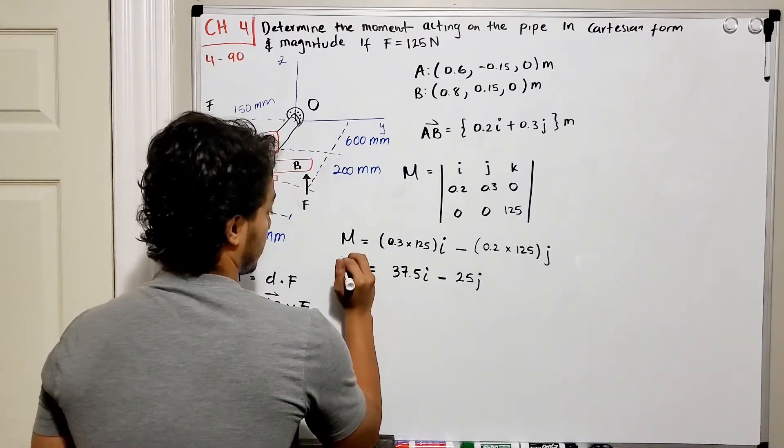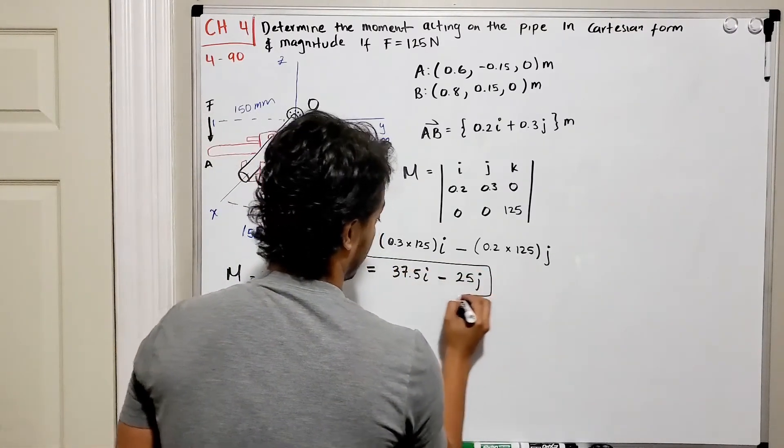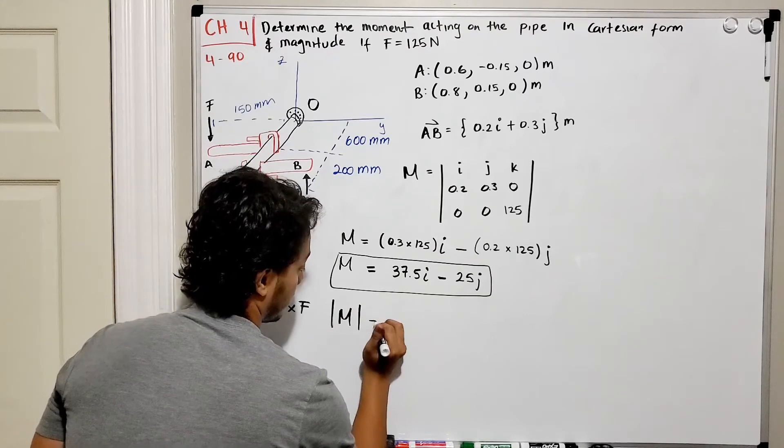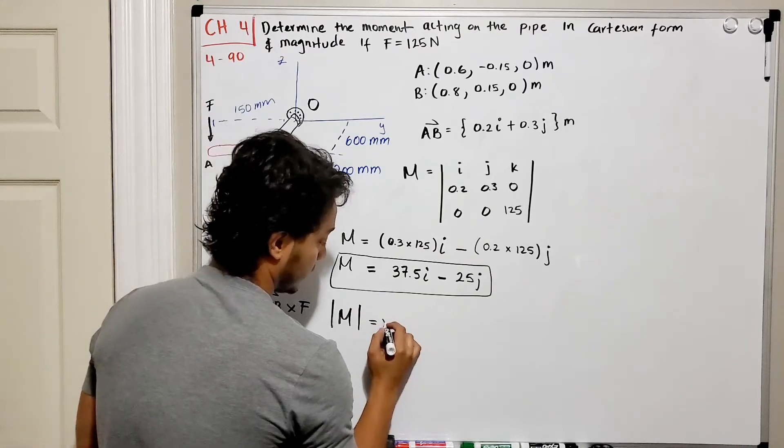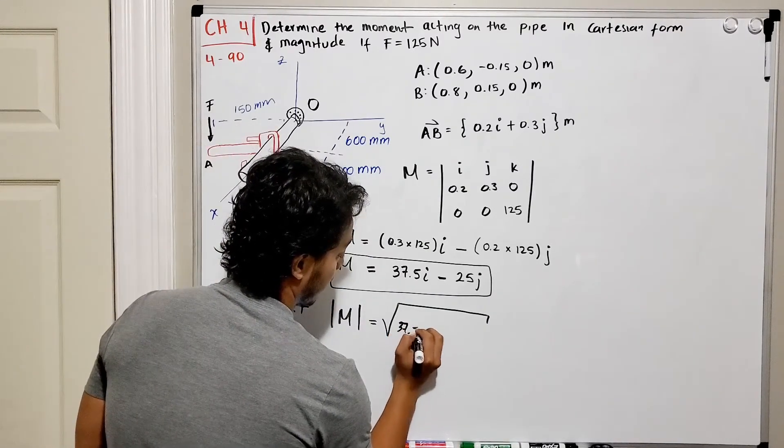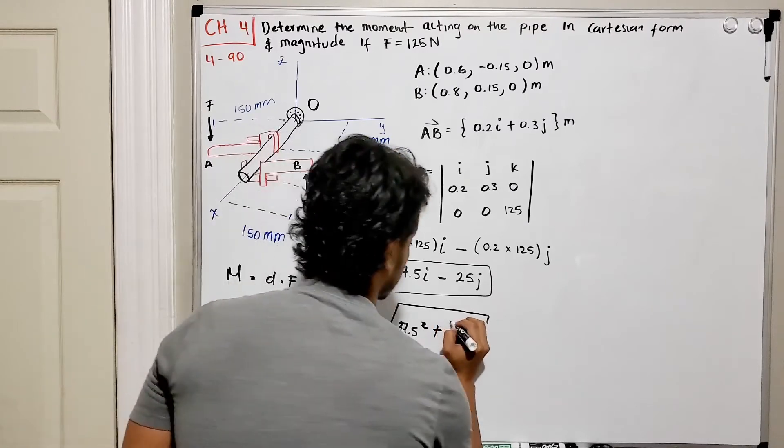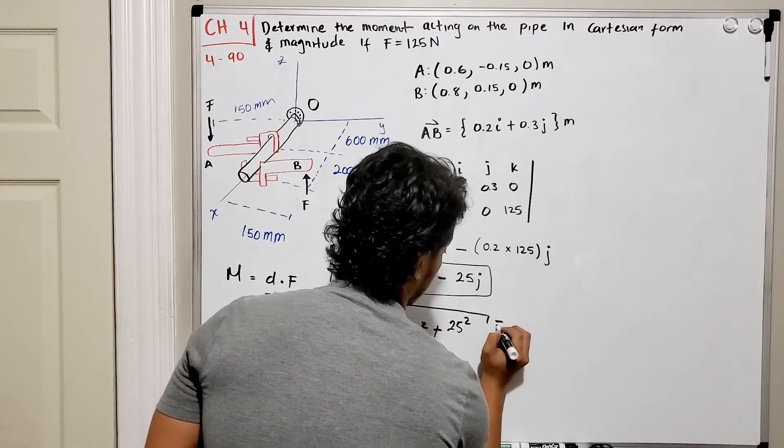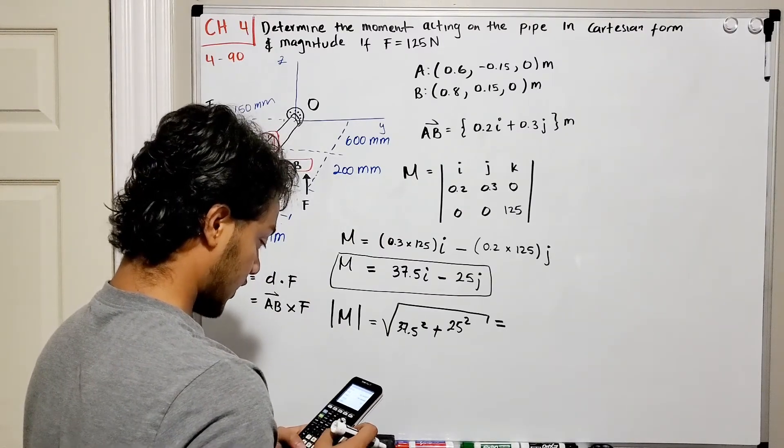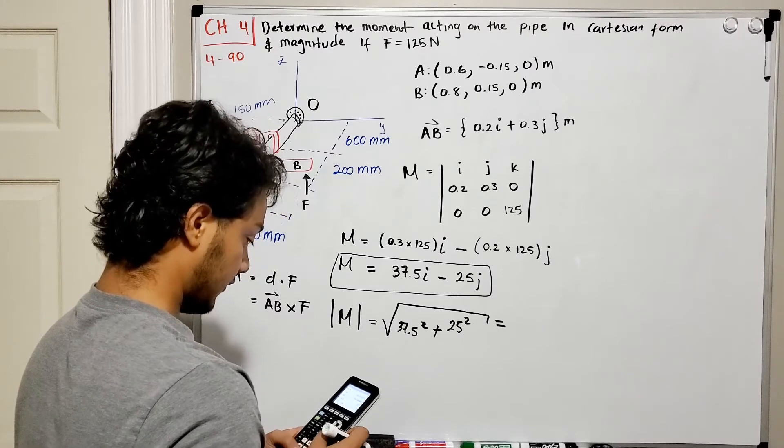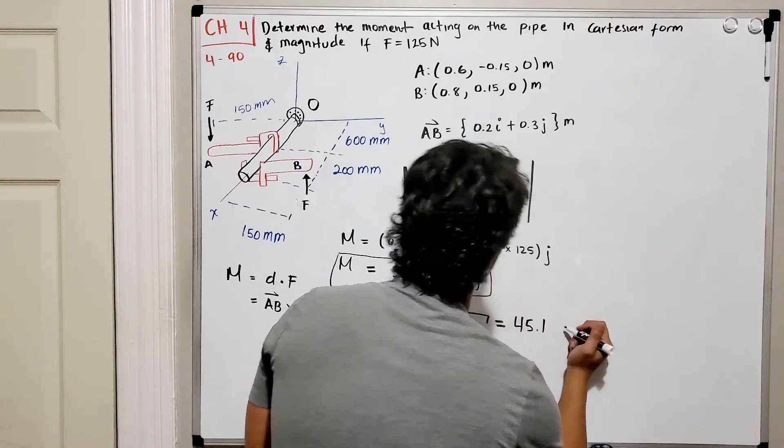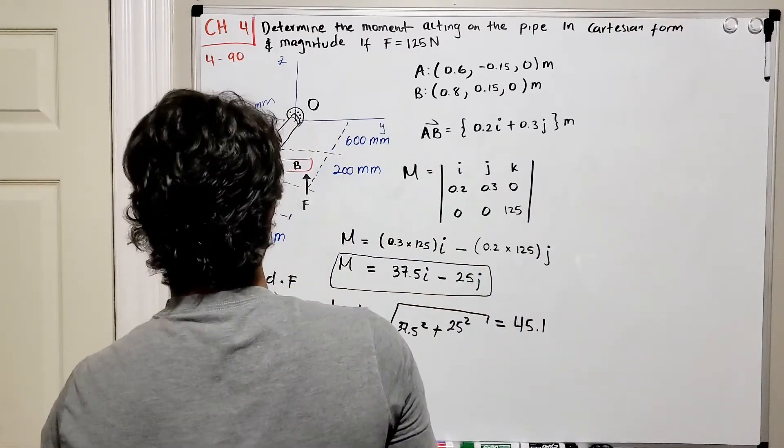And if we want to find the magnitude of my moment, we will do Pythagorean theorem, we'll do 37.5 squared plus 25 squared. And this will give me, so we do a square root of 37.5 squared plus 25 squared.